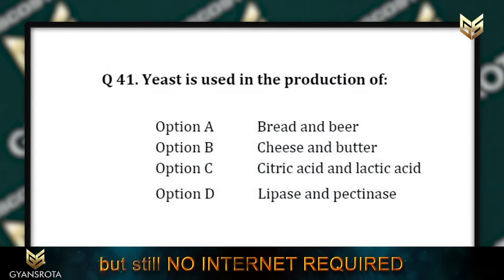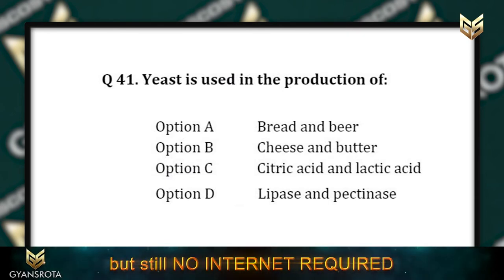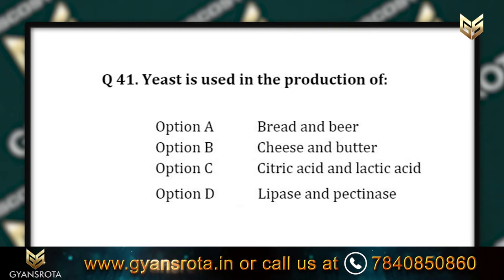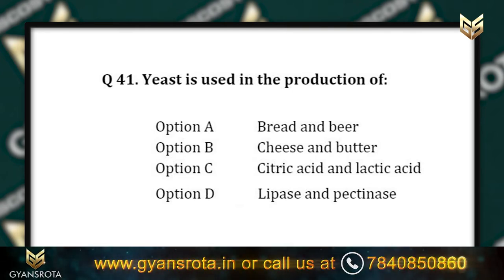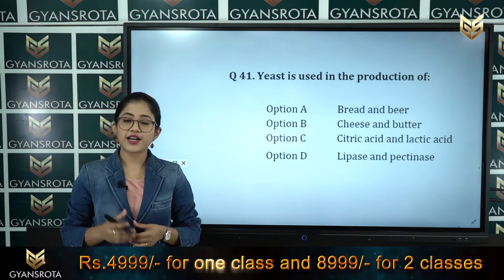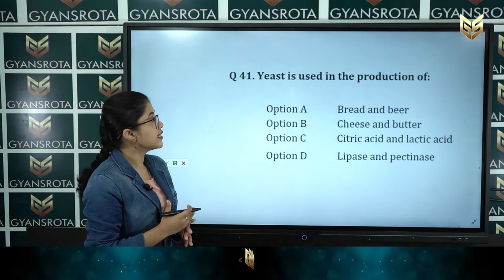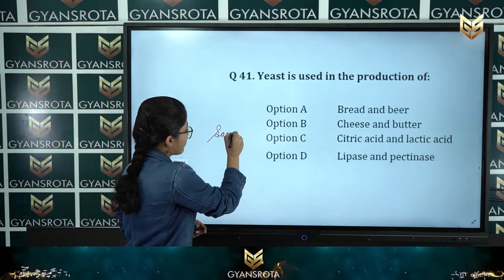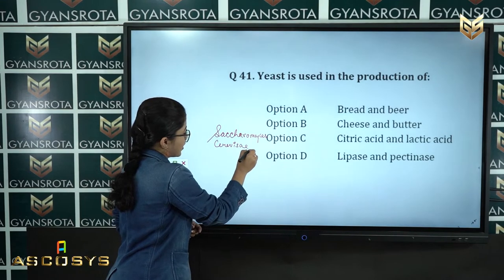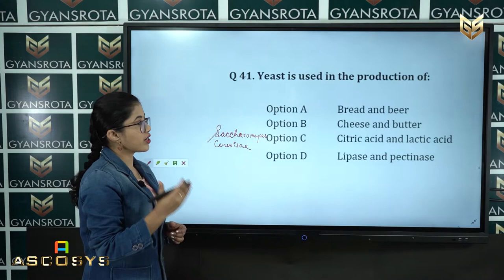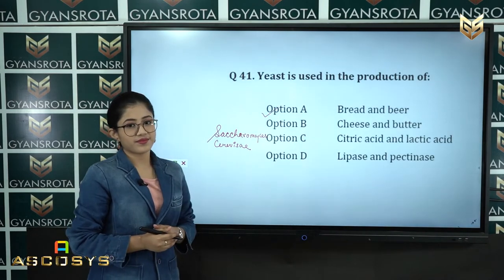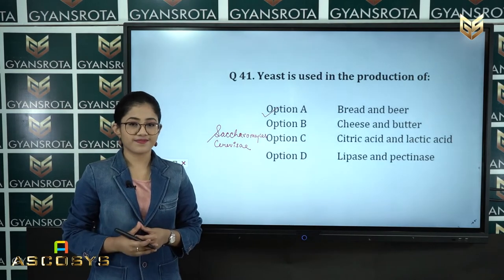Question 41: Yeast is used in the production of option A: Bread and beer, option B: Cheese and butter, option C: Citric acid and lactic acid, option D: Lipase and pectinase. This is from the chapter Microbes in Human Welfare. The correct answer is option A, bread and beer.